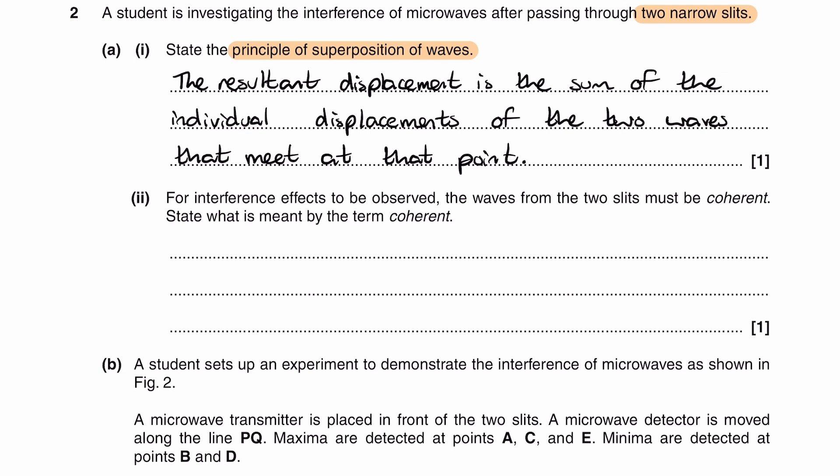And then for part two, for interference effects to be observed, the waves from two slits must be coherent. State what is meant by the term coherent, so another easy definition. If two waves are coherent, then the phase difference between those two waves is constant. So there is a constant phase difference between two waves.